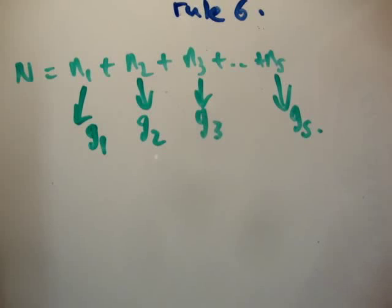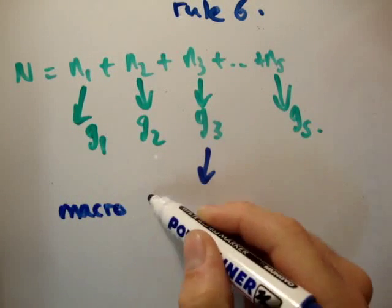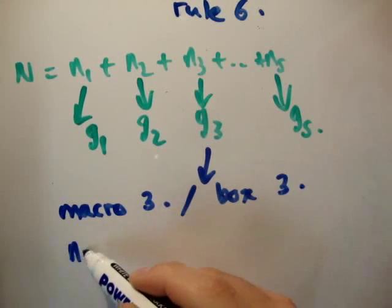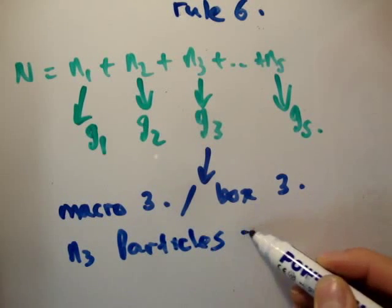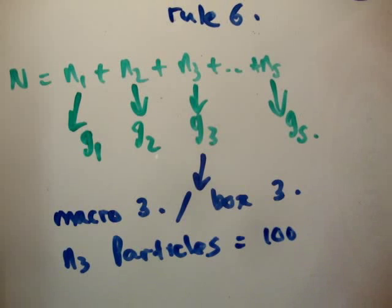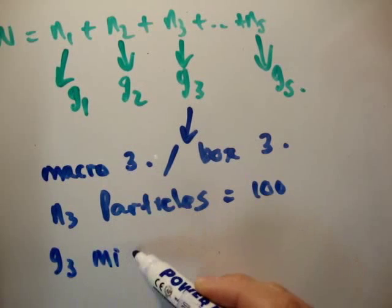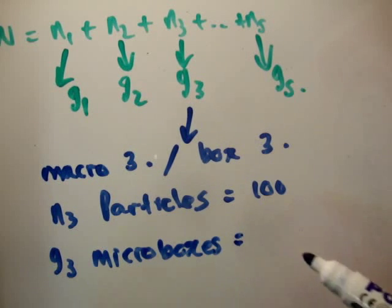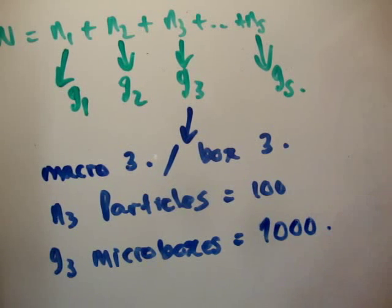So, let's look at, I don't know, let's take, for example, G sub 3. So, this is macrostate, macrostate 3, this is box 3. We have N sub 3 particles, let's say 100, and we have G sub 3 microstates. Let's say, I don't know, 1,000. For argument's sake, it actually doesn't matter at all.